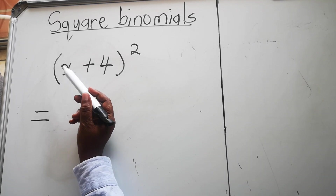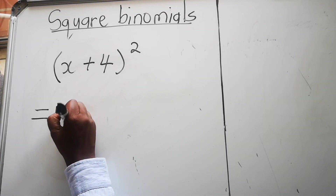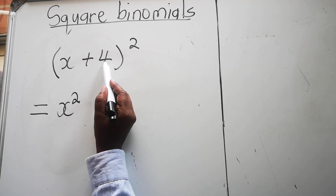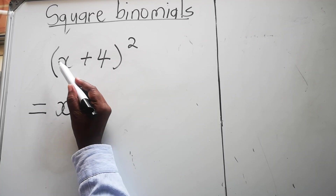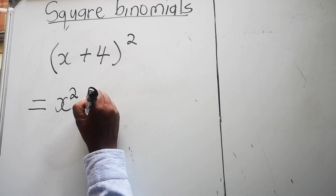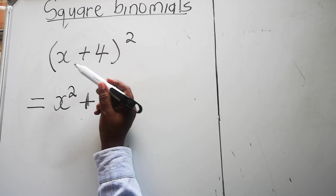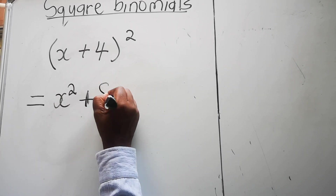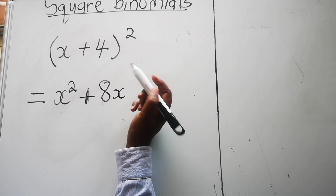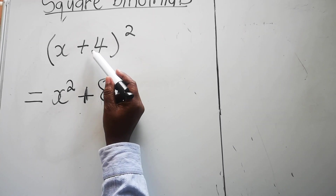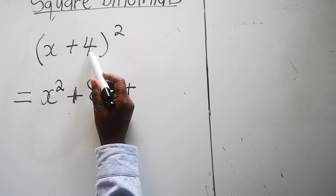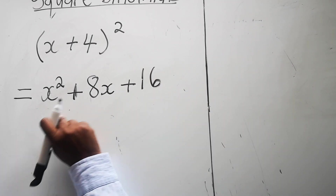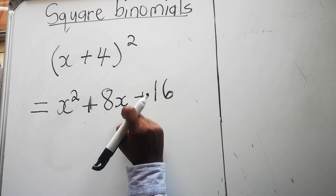We're going to go first term multiplied by first term: x times x is x squared. Then first term multiplied by second term multiplied by 2: positive times positive gives us positive, and x times 4 times 2 gives us 8x. Then 4 times 4 gives us 16, and positive times positive is positive. So the answer is x² + 8x + 16.